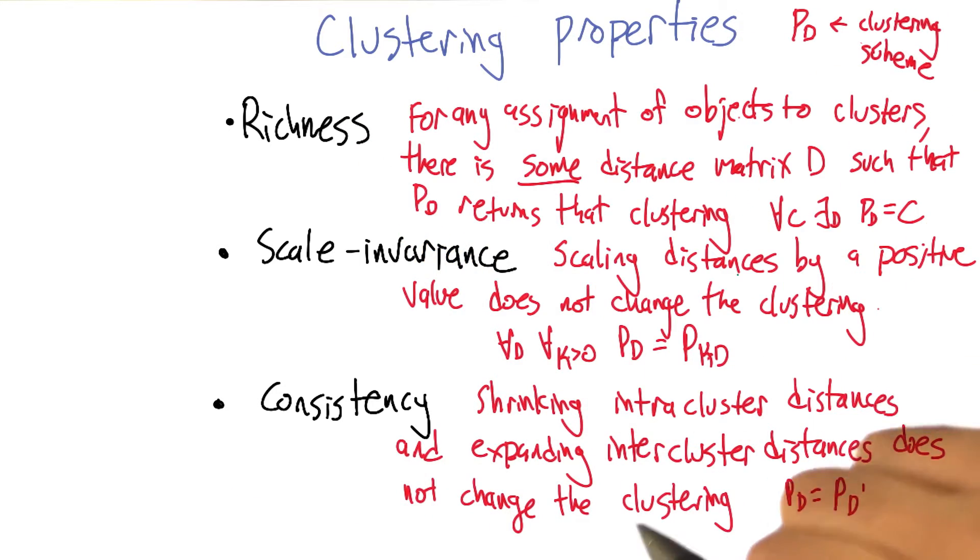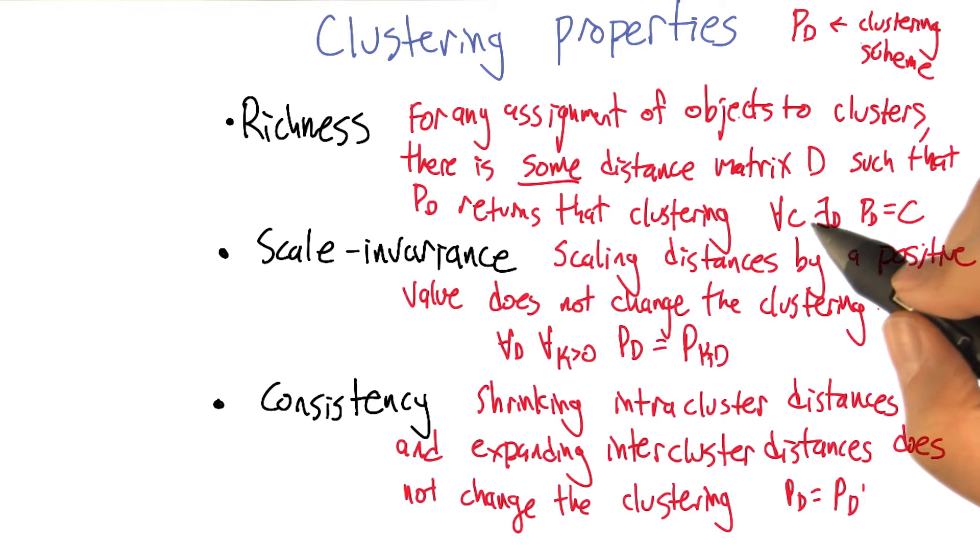So richness is the idea that for any assignment of objects to the clusters, there's some distance matrix that would cause your clustering algorithm to produce that clustering. For any clustering that you want to achieve, there is some distance matrix where P of D, your clustering algorithm, your clustering scheme, produces that clustering. So that's like saying all inputs are valid and all outputs are valid.